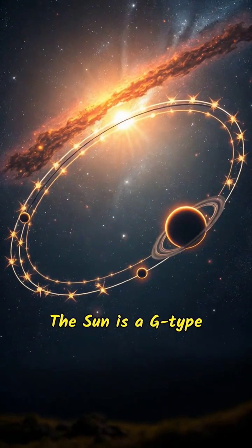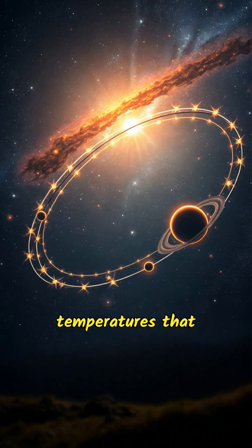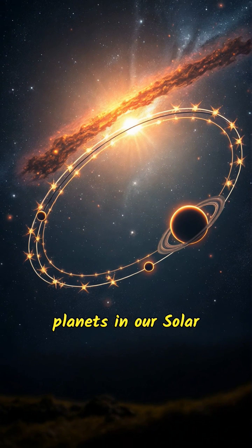The Sun is a G-type main sequence star, commonly known as a yellow dwarf, and possesses high temperatures that support nuclear fusion in its core. There are eight planets in our solar system, each with unique characteristics.